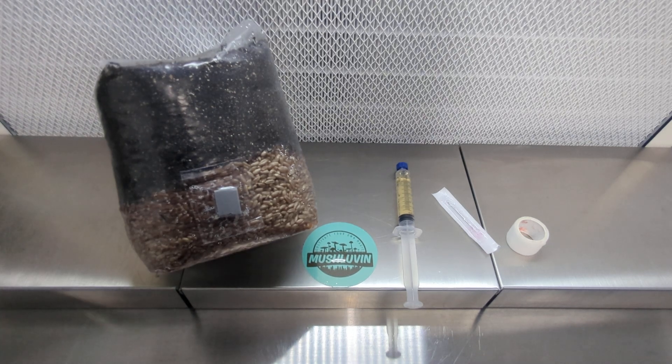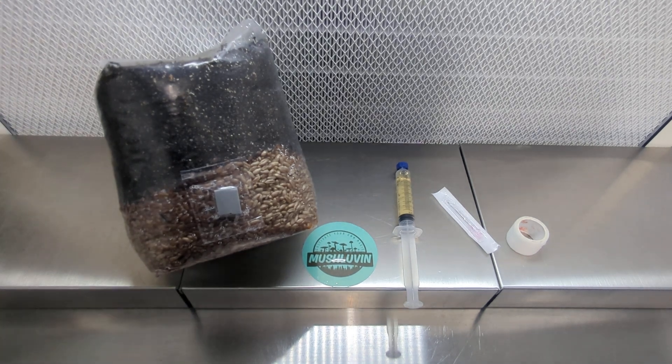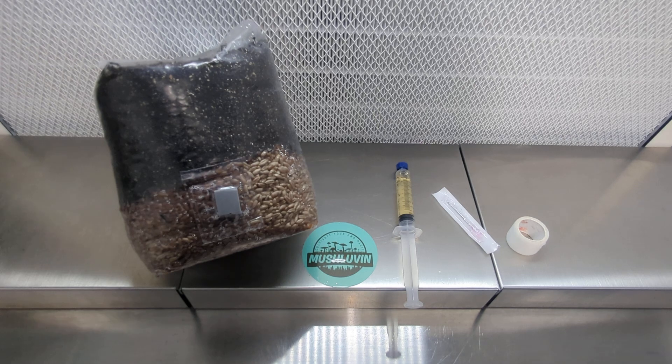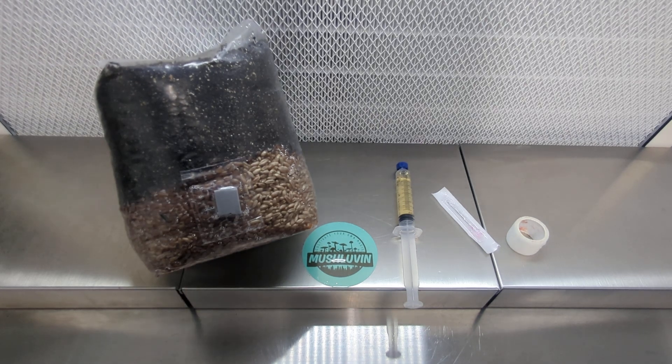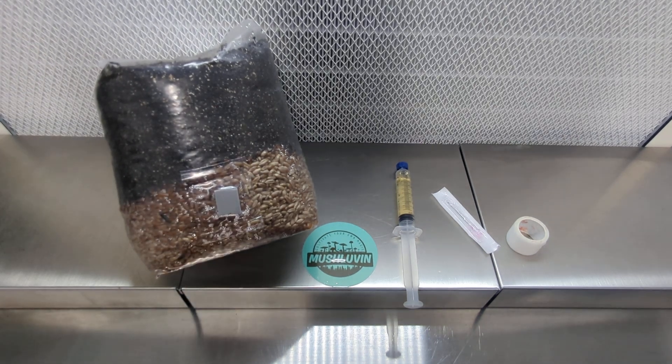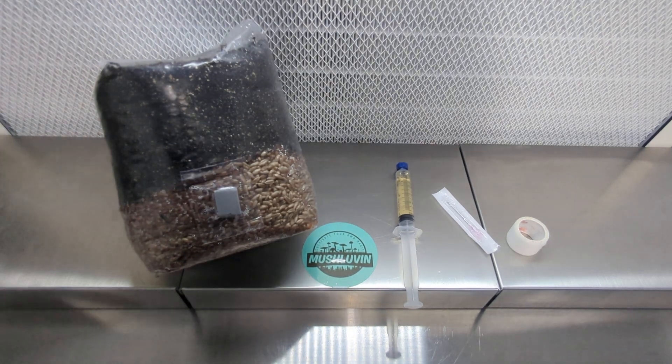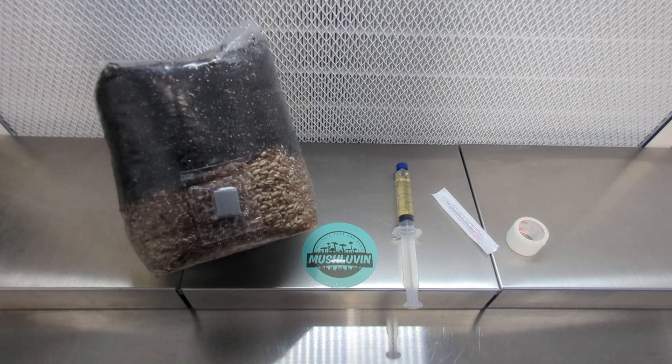You don't have to use a flow hood. You can use a still air box which you can build yourself or buy online. If you don't want to go that route you can always work in a bathroom. Again you'd want to turn off central AC and any fans for at least one hour before working and wipe down the countertops really well with 70% isopropyl alcohol.